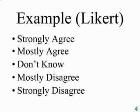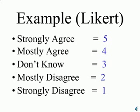Here we have a Likert scale. We give the subject a statement and see to what extent they agree: strongly agree, mostly agree, don't know, mostly disagree, or strongly disagree. We'll give one point for strongly disagree, two for mostly disagree, three for don't know, four for mostly agree, and five for strongly agree.